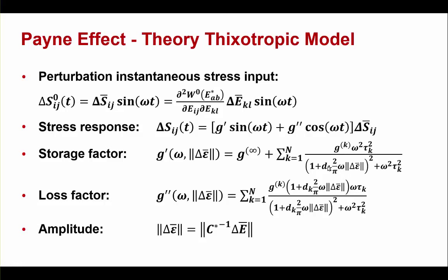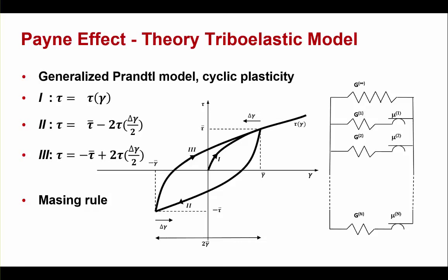Setting dk to zero for each Maxwell element recovers the usual Prony series expansion, confirming this model is an extension of the Prony series. The second model is the triboelastic model, based on a cyclic plasticity approach. It is called a generalized Prandtl model, where Prandtl elements — each consisting of a spring and a slip element — are combined in parallel. In a plasticity formulation, cyclic loading of the material produces a hysteresis loop, which accounts for both damping behavior and amplitude-dependent stiffness.